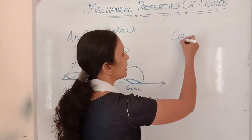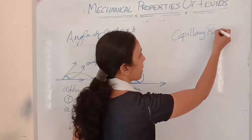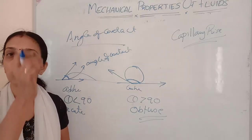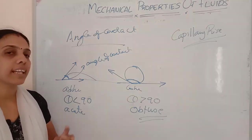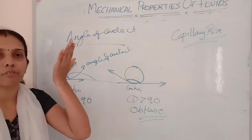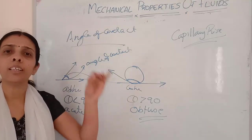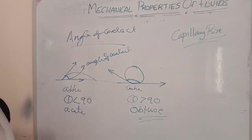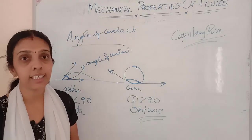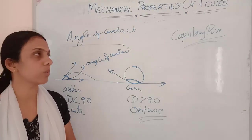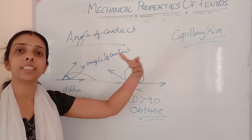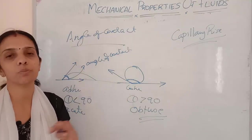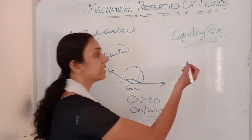Capillary rise is the phenomenon of a fluid rising against gravity through a small tube. If the liquid rises it is called capillary ascent; if it falls it is called capillary descent.